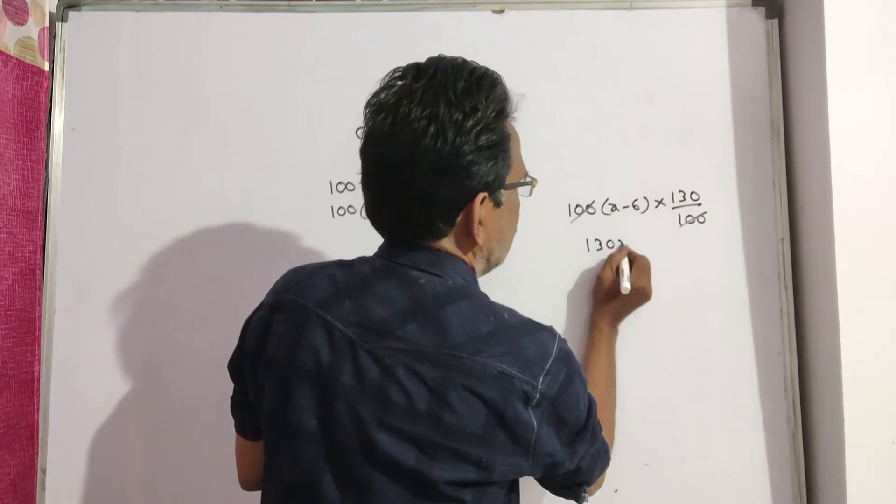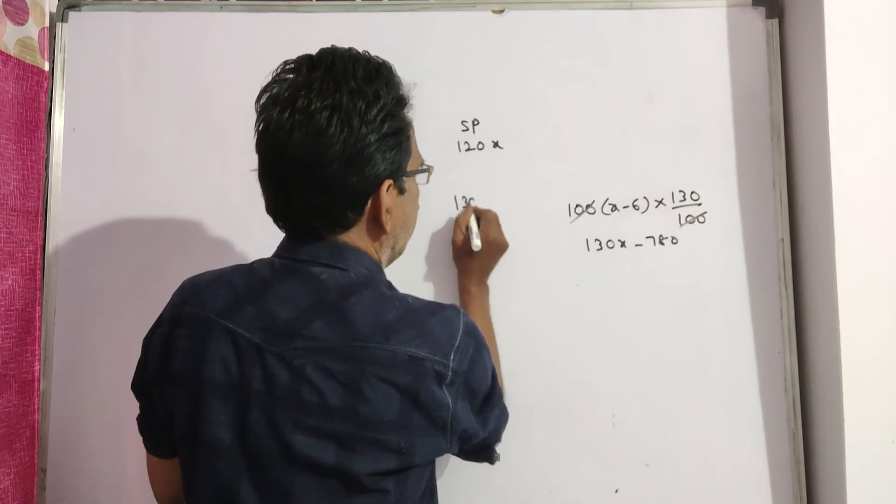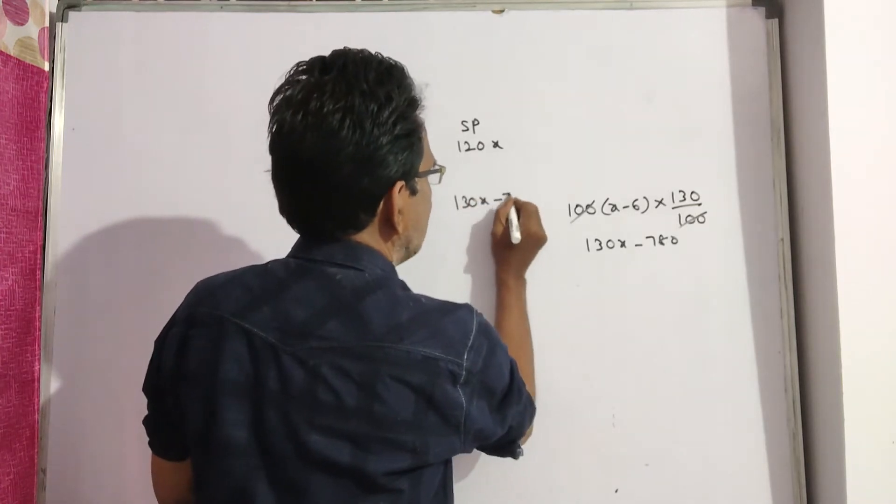So, 130x minus 780. The new sold price will be 130x minus 780.